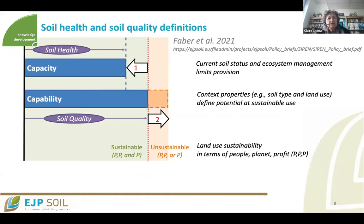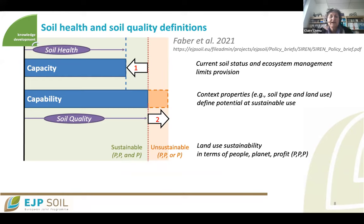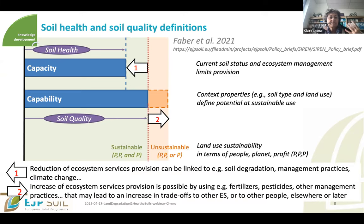Regarding definitions, we contributed to defining soil health by placing it in relation to soil quality. In agreement with the Mission Board proposal, we consider soil quality to be the capability of a given soil — for a given soil type, land use, and climate — its potential capacity. Soil health is the actual capacity of the soil, which depends on its current status and ecosystem management. There can be a reduction of ecosystem services provision related to soil degradation, management, or climate change, or an increase beyond soil quality — but that increase is unsustainable because it relies on inputs and management practices that endanger biodiversity.